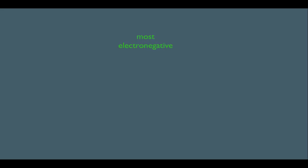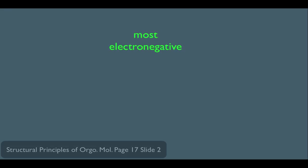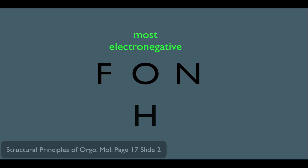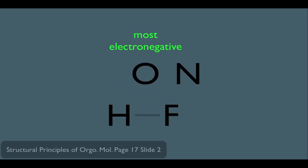Let's first look at the most electronegative atoms, which happen to be F, O, and N. F is the most electronegative, O is second most, and N is third most electronegative. Let's consider the bond that these atoms would make with hydrogen. For instance, the H-F bond: F is more electronegative than hydrogen, so this bond would be polar with the F being partially negative and the H being partially positive.